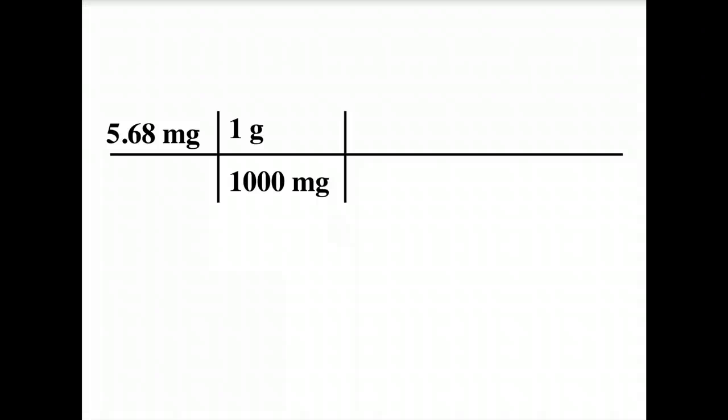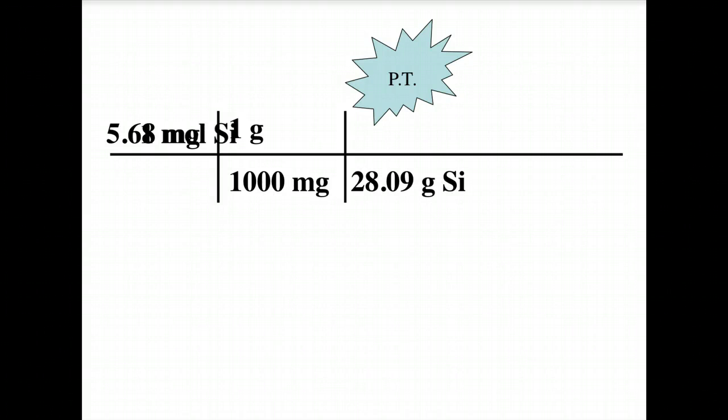So, you get out your handy-dandy periodic table and you find the mass of one mole of silicon, in this case. It happens to be 28.09 grams. And, then, one mole of silicon goes on top.